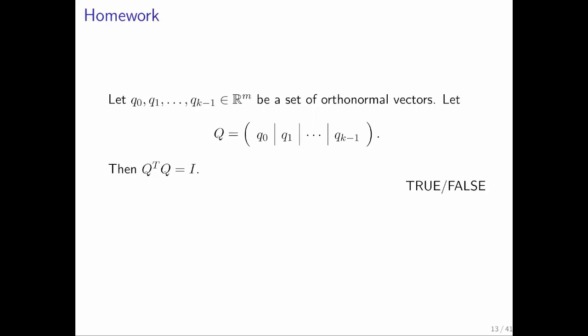Here's another homework. If we have k vectors that are mutually orthonormal, and we take those vectors and make them into the columns of a matrix, we've done that many times before in this course. Then the claim is, if you transpose that matrix and multiply it times itself, you get the identity. So go and do that homework.